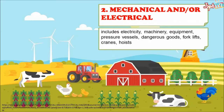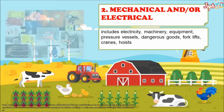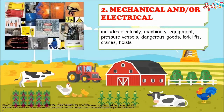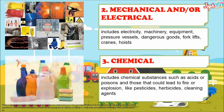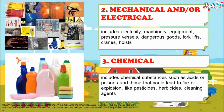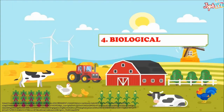Mechanical or Electrical — includes electricity, machinery, equipment, pressure vessels, dangerous goods, forklifts, cranes, and hoists. Chemical — includes chemical substances such as acids or poison, and those that could lead to fire or explosion, like pesticides, herbicides, and cleaning agents.